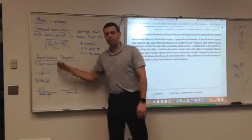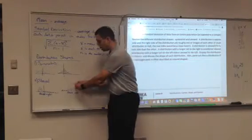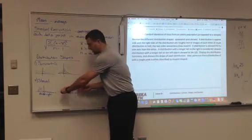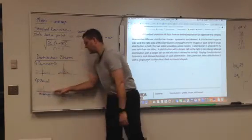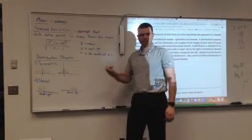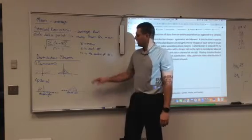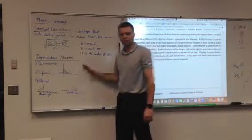So symmetric, equal on both sides. Skewed, a bunch of data points to the right and then a few off to the left, or vice versa. A bunch of data points to the left and then some data points kind of in the small tail to the right. Any questions on symmetric versus skewed?